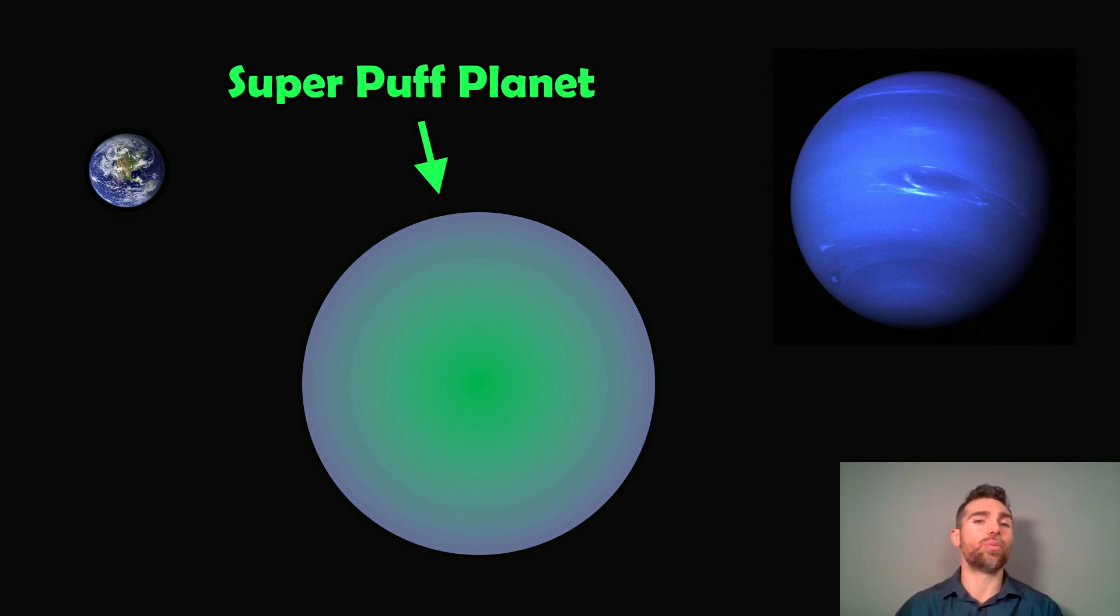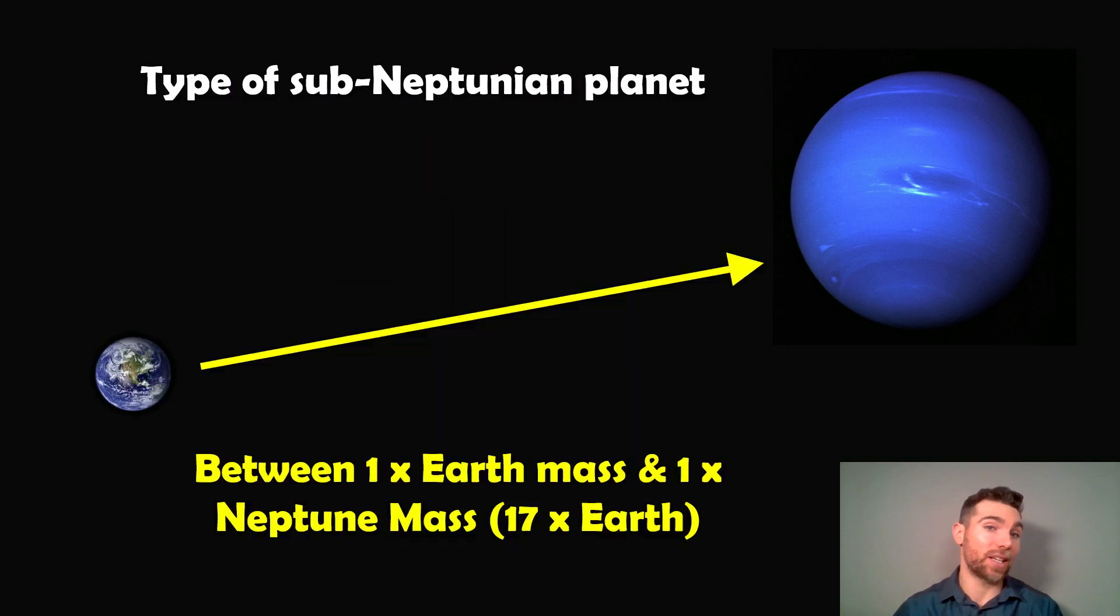And these are called Super Puff Planets and they're quite unusual, or that's even if they're real. They might not actually be real. It might be in the way we're measuring their radius and their mass. So what are they? Well, they're a type of sub-Neptonian planet and sub-Neptonian planets are between the mass of Earth and the mass of Neptune, which is about 17 times the mass of Earth. So these planets sit in this kind of gap between Earth size or Earth mass planets and Neptune mass planets.